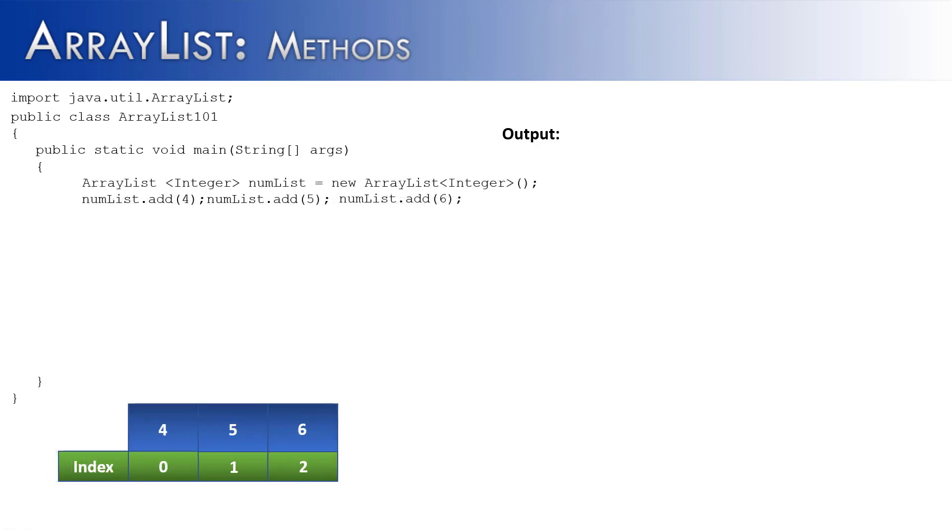This example is very similar to the last example. In fact, it has the exact same starting code. We create an ArrayList called numList, then we add three values: 4, 5, and 6.